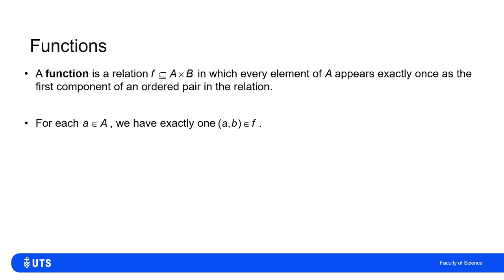For each element little a from the set A, there is exactly one ordered pair (a, b) in f. It won't be that a might have 3 as the second element, or 6, or 10. No, there is exactly one b which makes up the second element of an ordered pair in f for each different a.